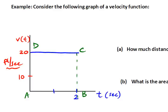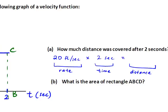So if we want to know how much distance was covered after two seconds, we can compute the distance by simply doing rate times time, like in algebra class. If the rate is 20 feet per second constant over two seconds, then the distance will simply be 40 feet.